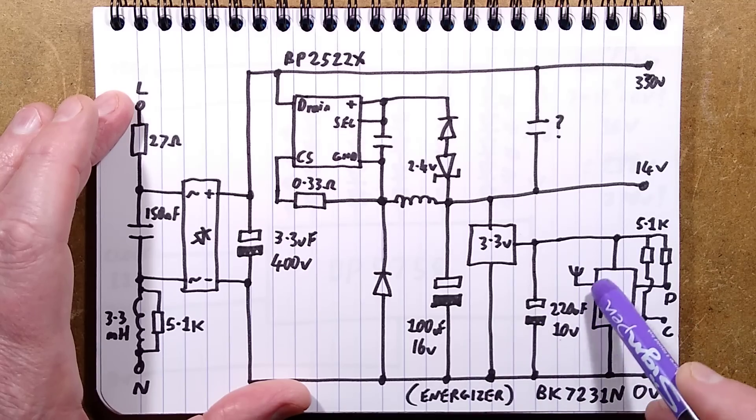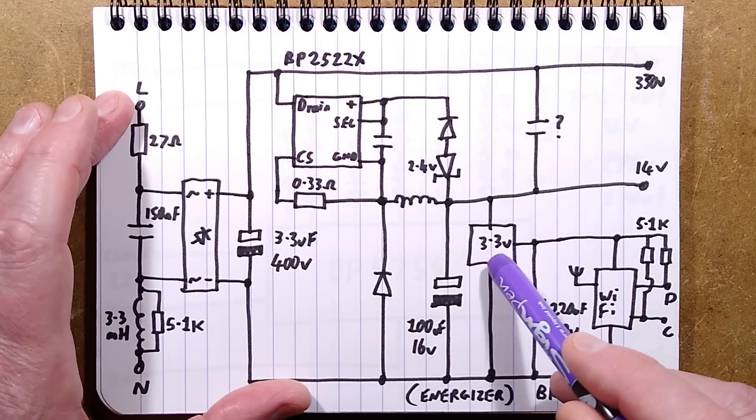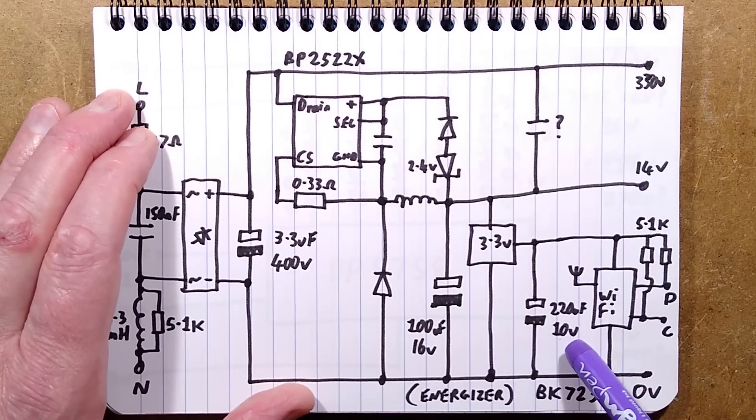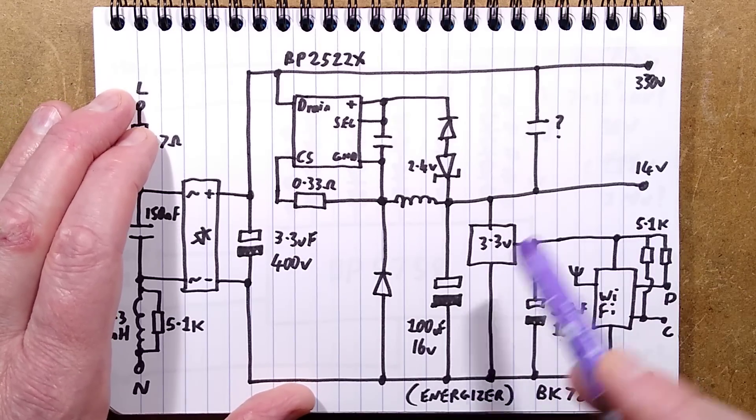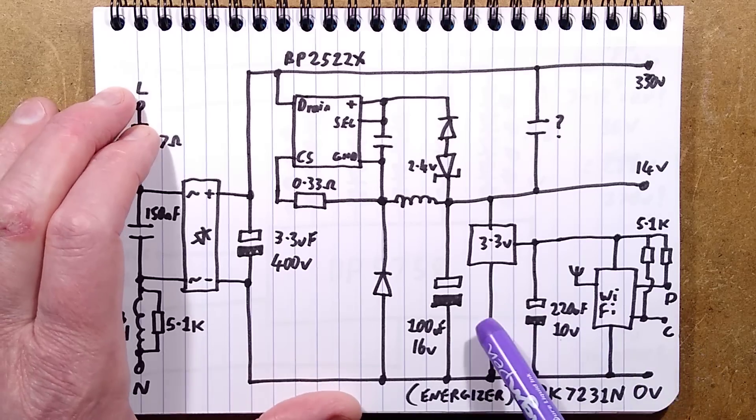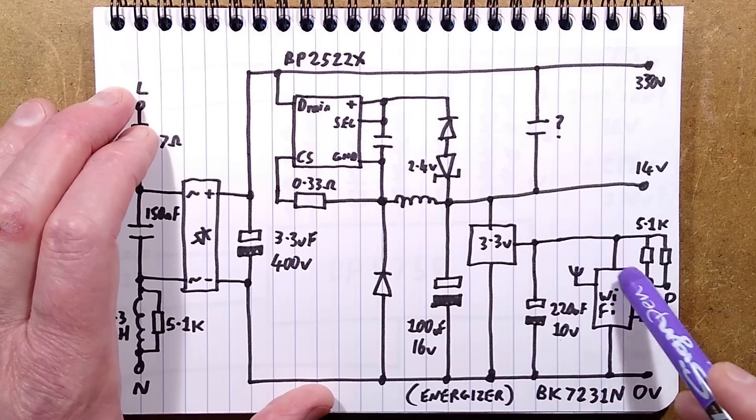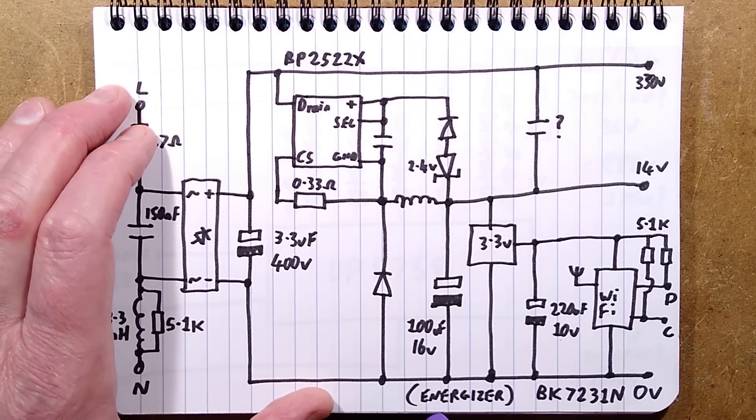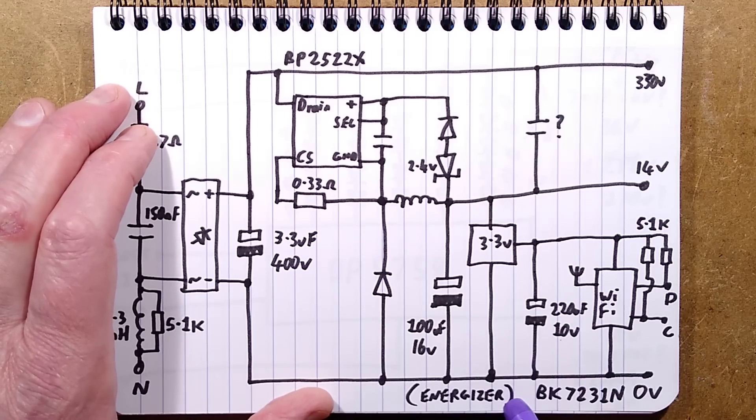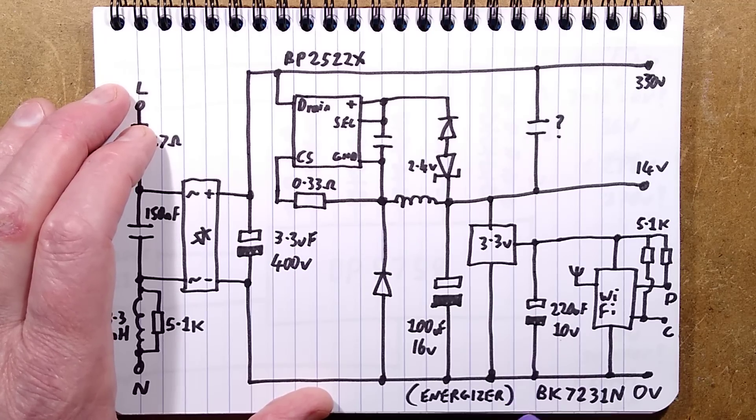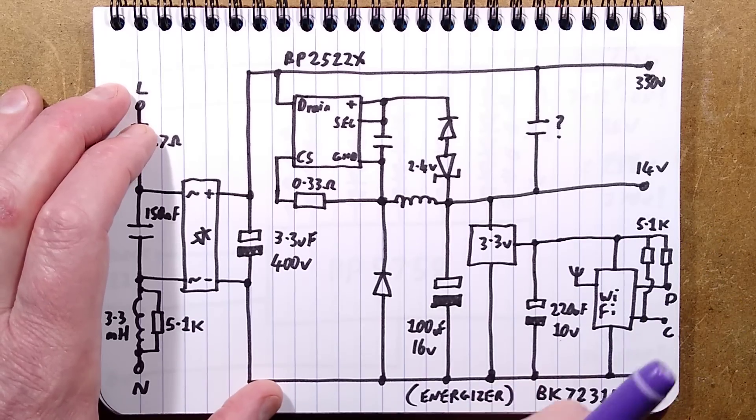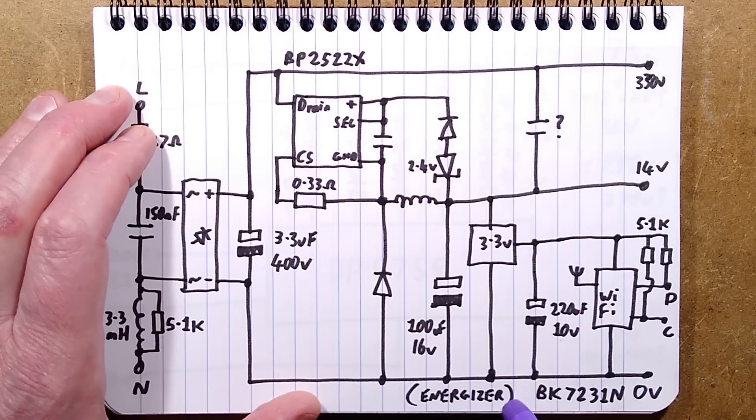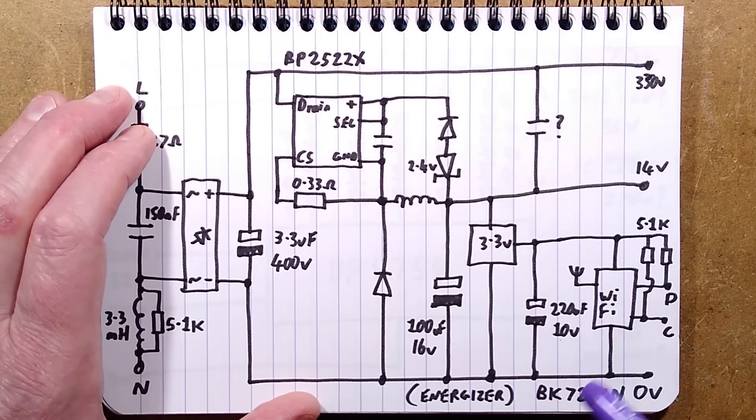I'm guessing this must take a modest amount of current if they use a module like that instead of a simple regulator. The 14 volt supply has a 100 microfarad 16 volt capacitor, then powers the 3.3 volts which powers the Wi-Fi module. It's interesting to note the chip wants to remove the Energizer label off an Ever Ready product. So that's two dead brands - why don't they just add Duracell as well so they can have all the zombie battery brands at the same time?